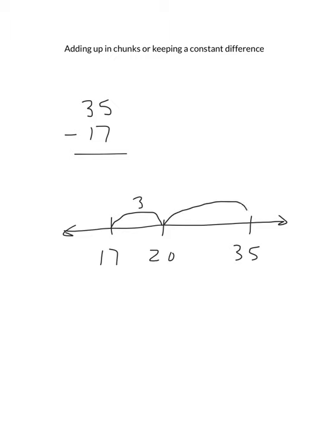How far is 20 from 35? 15 away. So the difference between 17 and 35 is a difference of 18. So that's adding up in chunks.